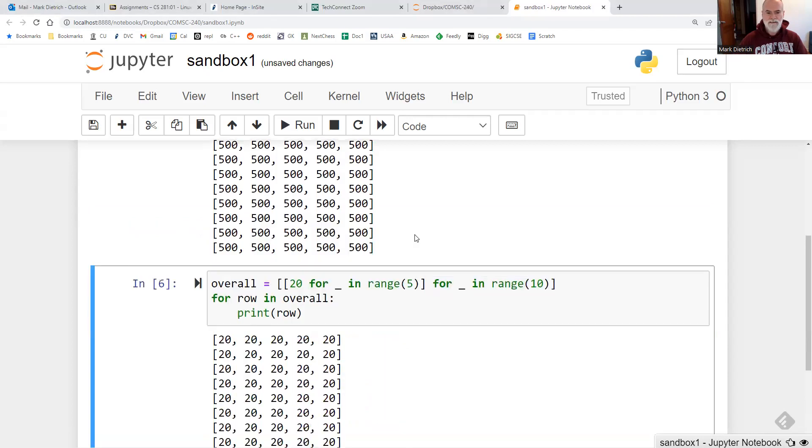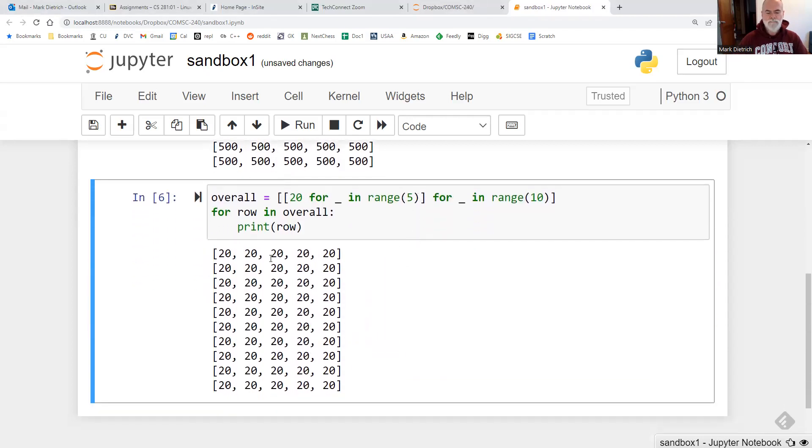So here's the inner list that then is going to get repeated and repeated 10 times. So when we put this to run, there's our 10 row, five column list of 20s in this case.